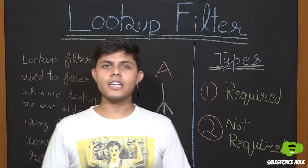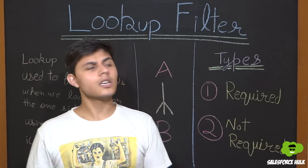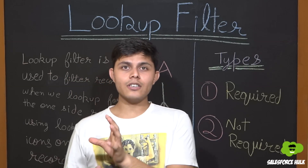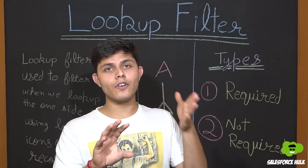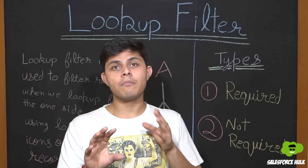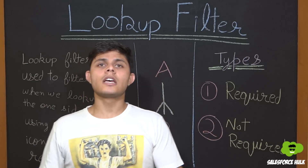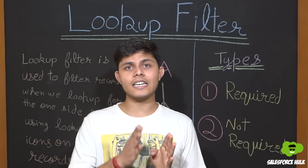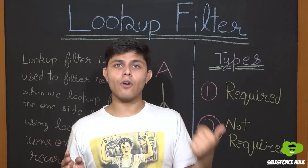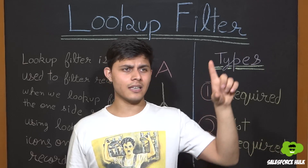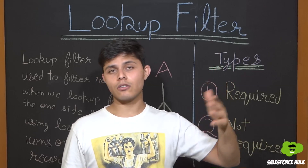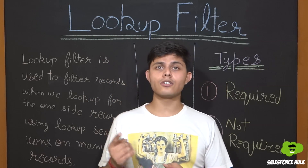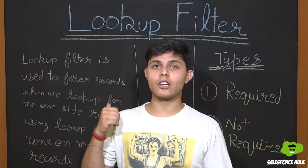Lookup filters are basically of two types: first is required, and second is not required. Required means that whenever you set a particular criteria, only those records which meet that criteria will be available to relate. In not required, initially all records which meet the criteria set in the lookup filters will be available, but if you want to relate another record outside that filter, you can clear all the search results and get all records of Object A.